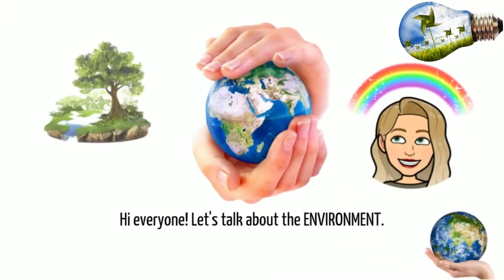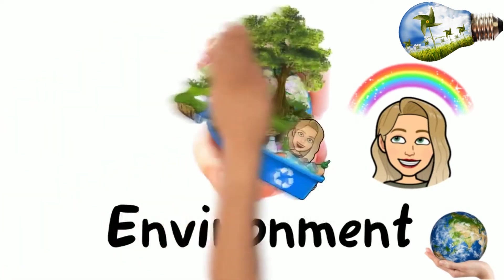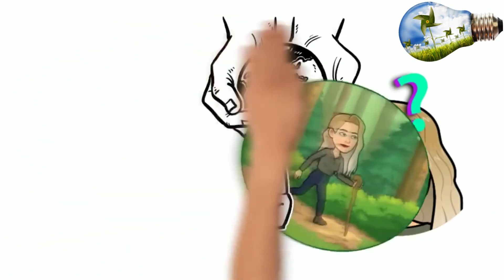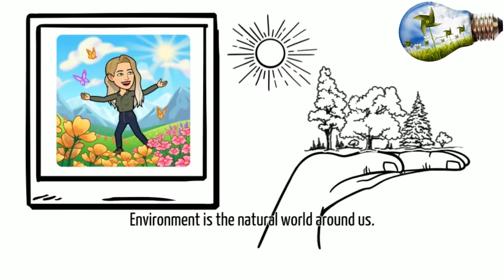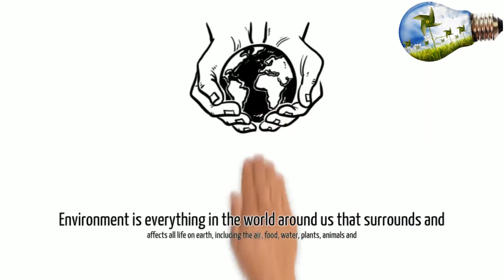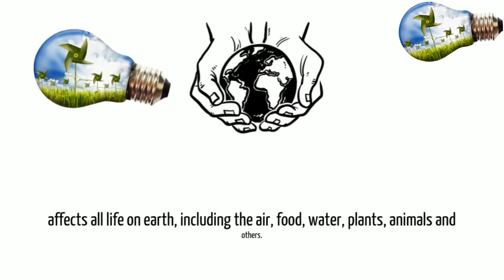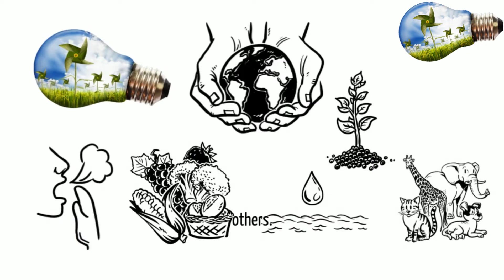Hi everyone! Let's talk about the environment. What the environment is? Environment is the natural world around us. Environment is everything in the world around us that surrounds and affects all life on Earth, including the air, food, water, plants, animals and others.